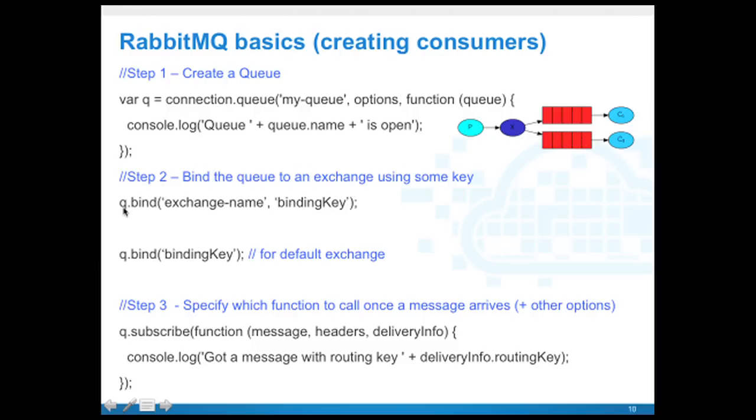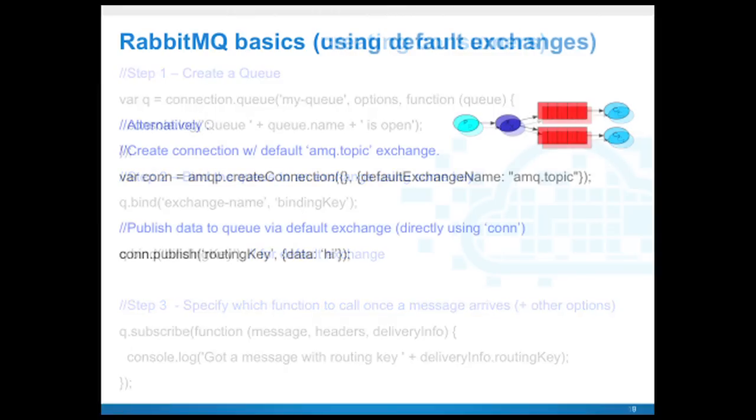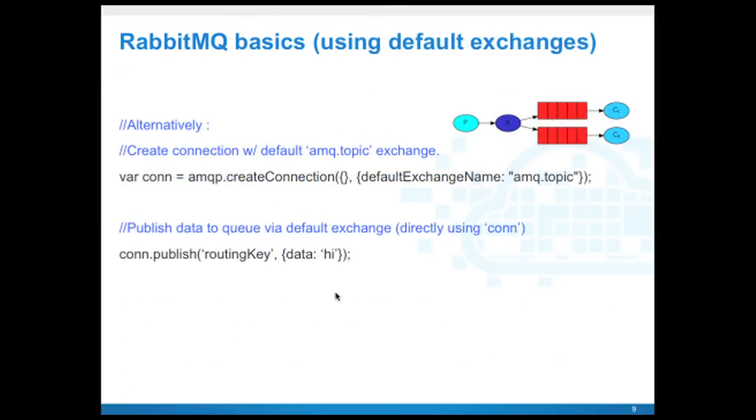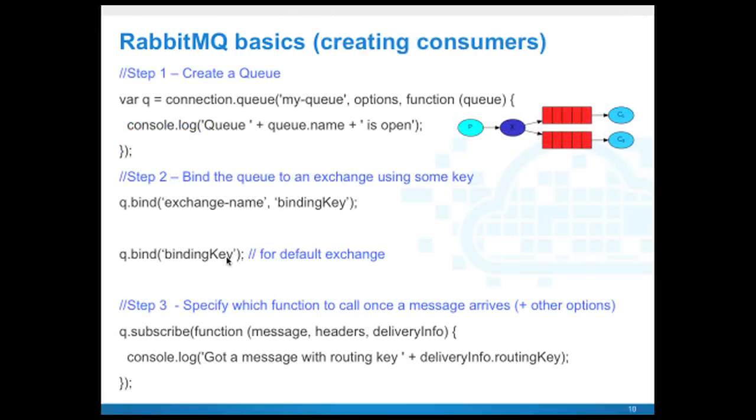In step two, we're going to say queue.bind and provide an exchange name. If it's a default exchange, we don't need to pass the exchange name. Secondly, we'll pass a binding key, so if the binding key or the binding key's regular expression matches the routing key, then you get the message delivered. After step two we have created these red boxes and these arrows. In step three we say queue.subscribe. Here we're saying once the message gets delivered, call this function. That's basically these two arrows here. And that's how messages are delivered from producer to consumer.